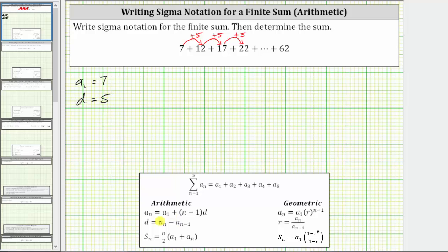There's also a formula to determine the common difference d, given by a sub n minus a sub n minus one, which means to determine the common difference d, we can use any term in the series and subtract the term before it.